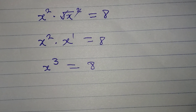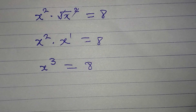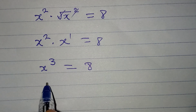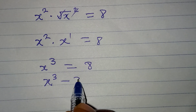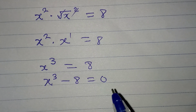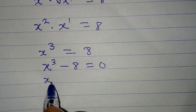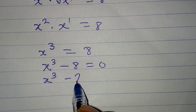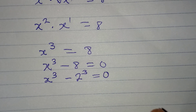But what does the question say? That we should solve it completely. Now bring everything to the left, so we'll have x to the power of 3 minus 8 equal to 0. And this means that we have x to the power of 3 minus 2 to the power of 3 equal to 0.